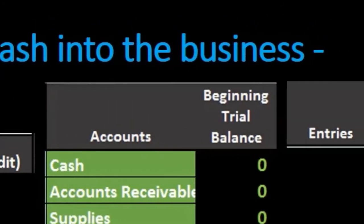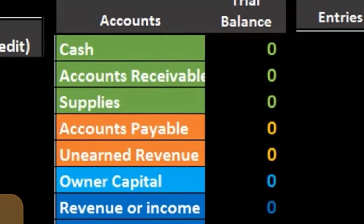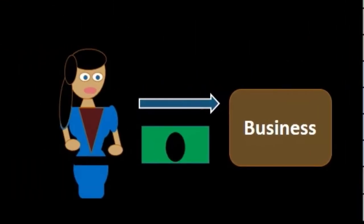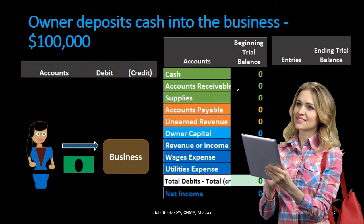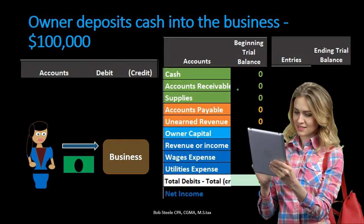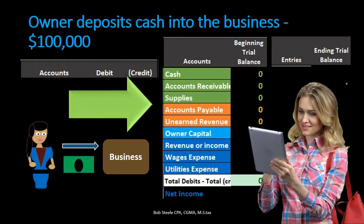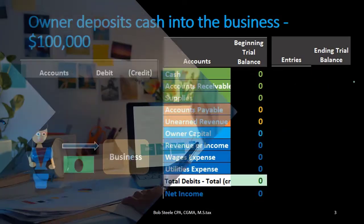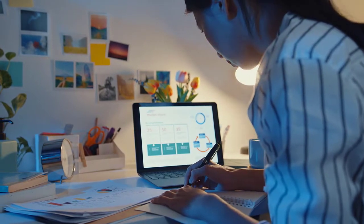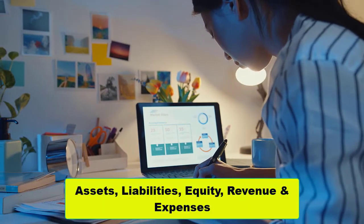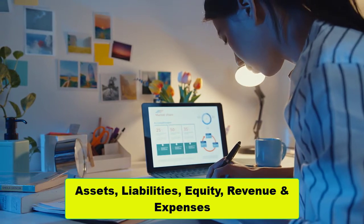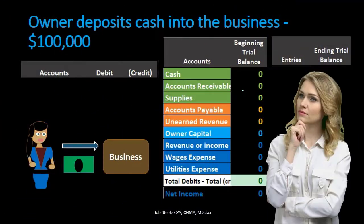We're going to record these transactions on the left-hand side in accordance with our thought process, and then post them to a worksheet format — not a general ledger, but in a similar way — in order to see what is happening to each of these accounts individually, as well as the groups of accounts in terms of assets, liabilities, equity, revenue, and expenses.